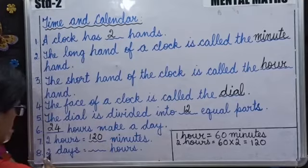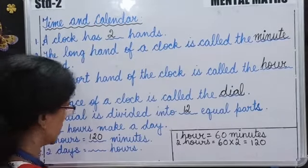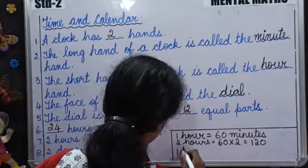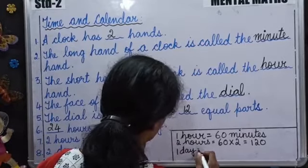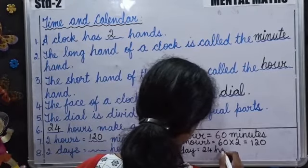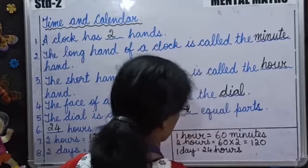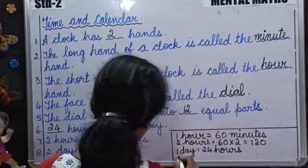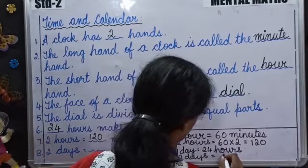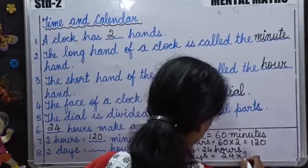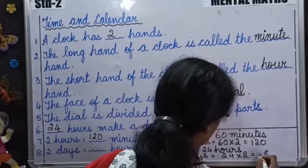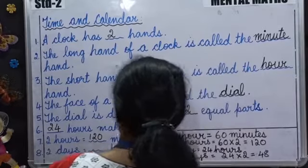Question number 8: 2 days is equal to how many hours? 1 day is equal to 24 hours. So 2 days is equal to 24 multiplied by 2. So you get 48. 2 days are equal to 48 hours.